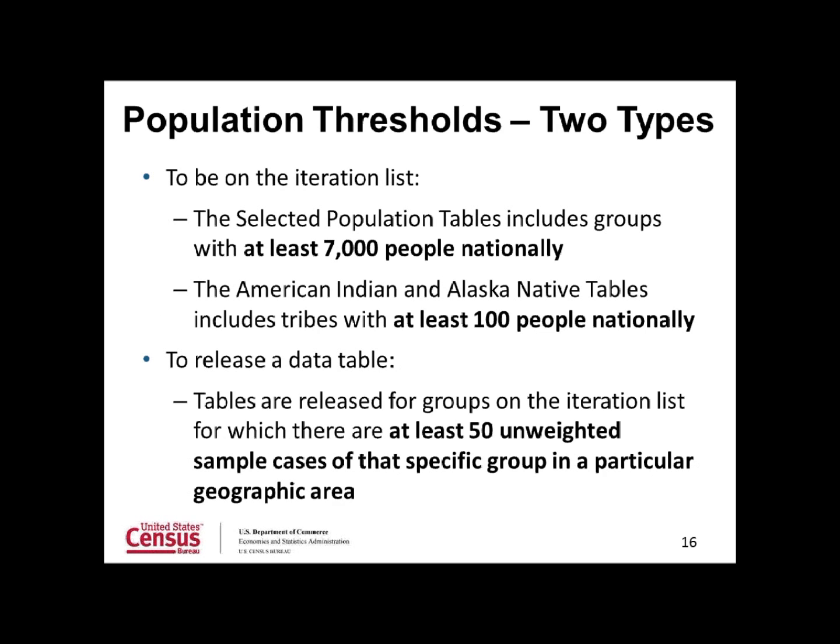To be included on the iteration list for the ACS Selected Population Tables, we have a Census 2010 population threshold of at least 7,000 nationally. However, a few numerically small population groups that did not meet this threshold were grandfathered onto the selected population tables because they were included in similar Census 2000 data products. A population threshold of at least 100 people nationally was used to determine which tribes would be included on the AIAN tables. To release a data table, there must be at least 50 unweighted sample cases of that group in that geographic area — for example, you will only see data for Navajos in Phoenix, Arizona if there were at least 50 unweighted sample cases in the 2006–2010 ACS data.